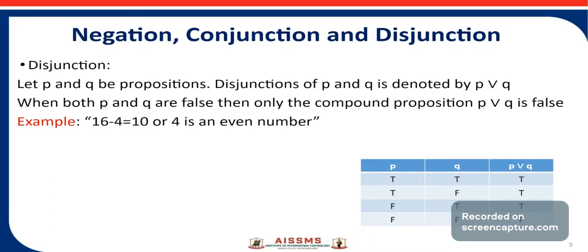For the sake of reference, see the truth table for disjunction. When P is true and Q is true, P or Q is true. When P is true and Q is false, P or Q is true. When P is false and Q is true, P or Q is true. When P is false and Q is false, then P or Q is false. When both P and Q are false, then only the compound proposition P or Q is false.